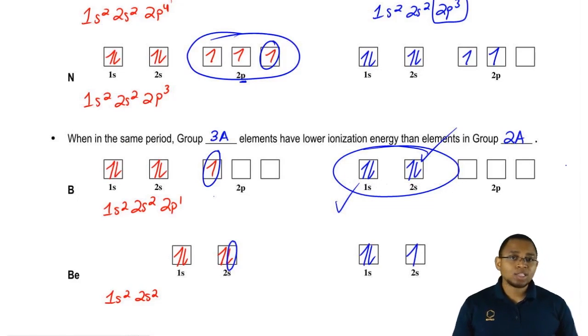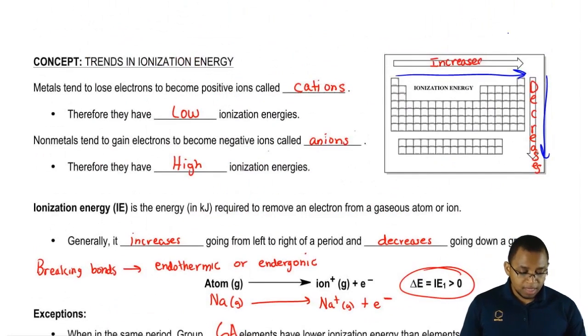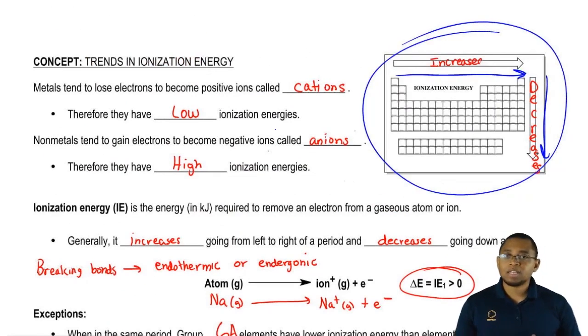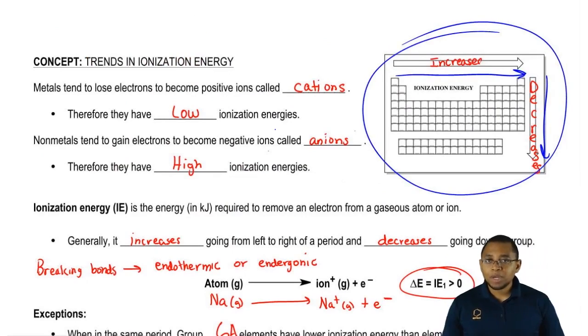Group 3A has a lower first ionization energy than group 2A when they're in the same period. If they're not in the same period, then we go back to the default rule. That exception only works if the elements we're talking about are in the same period with each other.